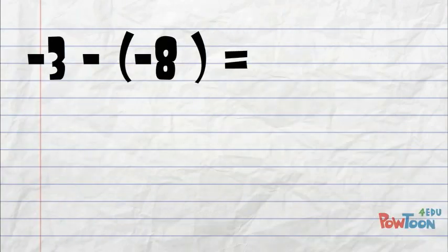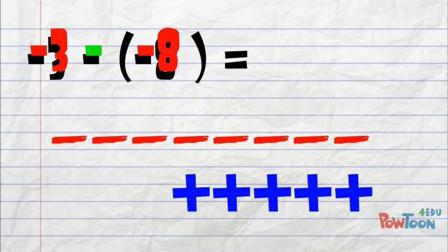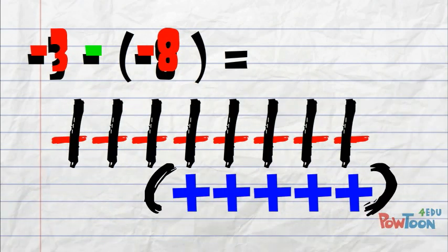How about the problem negative 3 minus negative 8? We begin with 3 negative tiles. We realize that we don't have enough tiles to take away negative 8, so we bring out some zero pairs. Now we can take away 8 negative tiles and get our answer, a positive 5.